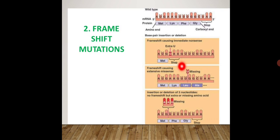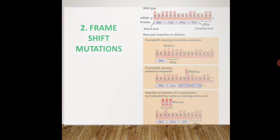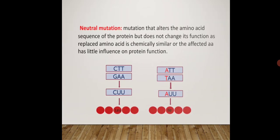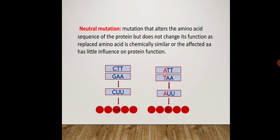Frame shift mutation may cause nonsense or missense types of mutation. That is all about the different types of mutation — base pair substitution and induced mutation. In our next lecture we will discuss the next points. Thank you.